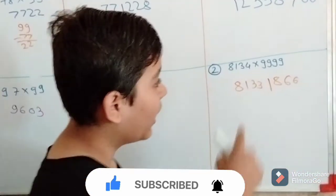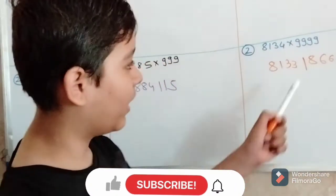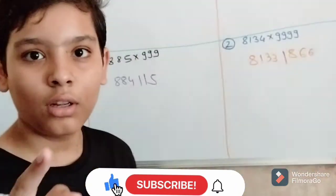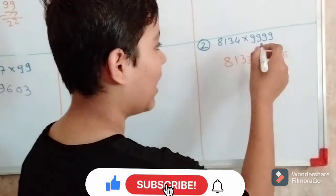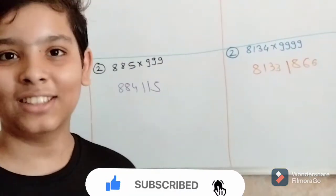8134 into 9999 is equal to 9999. 8134 minus 1 is 8133, and 9999 minus 8133 is equal to 1866.